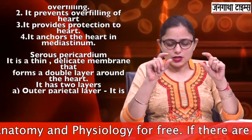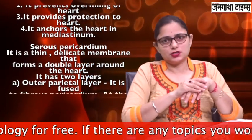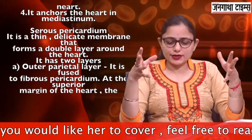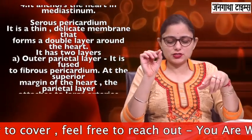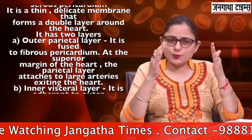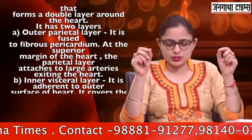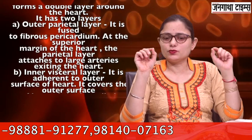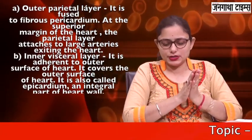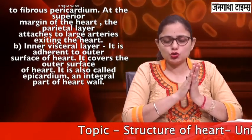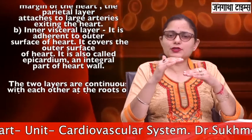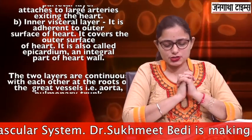The two layers of serous pericardium are continuous with each other at the roots of the great vessels — the aorta, the pulmonary vessels, the vena cava, and the pulmonary veins. The serous pericardium surrounds the slit-like pericardial cavity, which is a small potential space between the visceral and the parietal layers, filled with pericardial fluid. The pericardial fluid consists of slippery secretions of the pericardial cells, which allow smooth movement between the layers when the heart beats — that is, when it contracts and expands — preventing friction between the different layers.